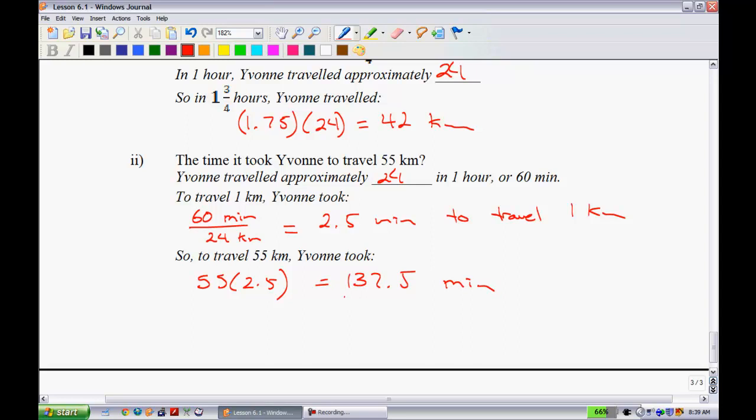Or in terms of hours, you would just have to subtract 120 minutes, that would give you two hours. How much do you have left over? You have 17.5 minutes, or you could even write this as 2 hours, 17 minutes, and 30 seconds.